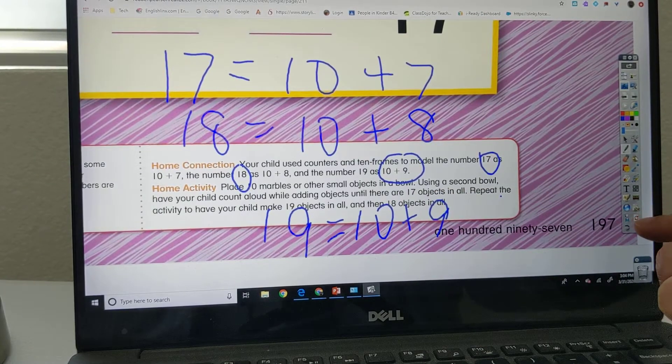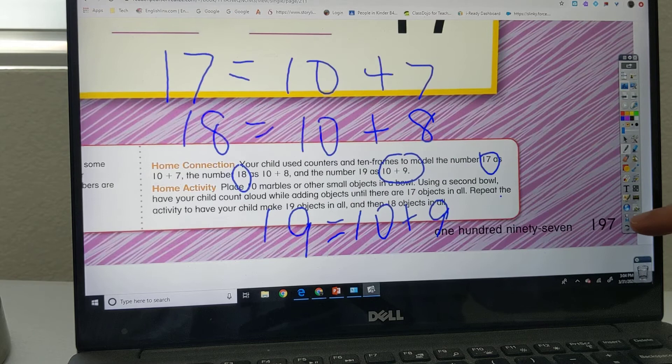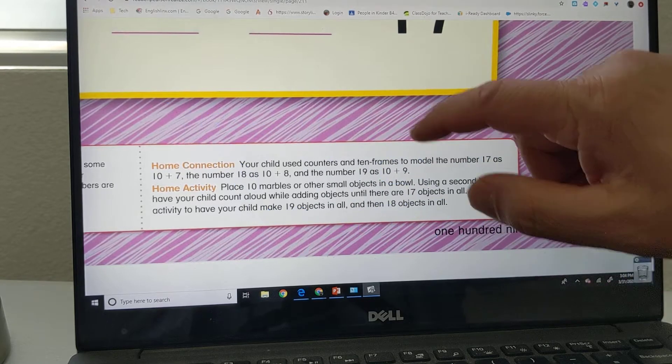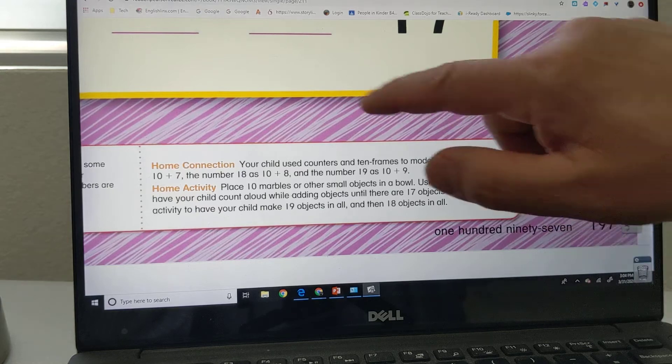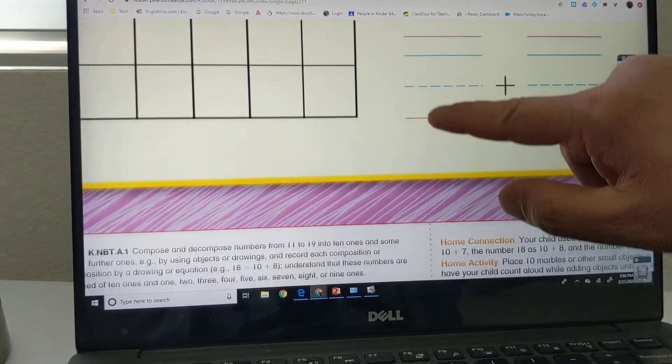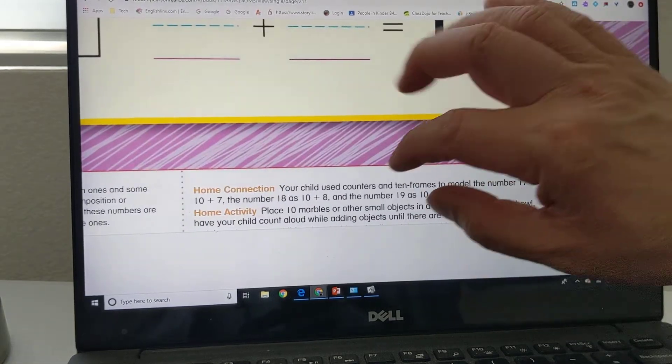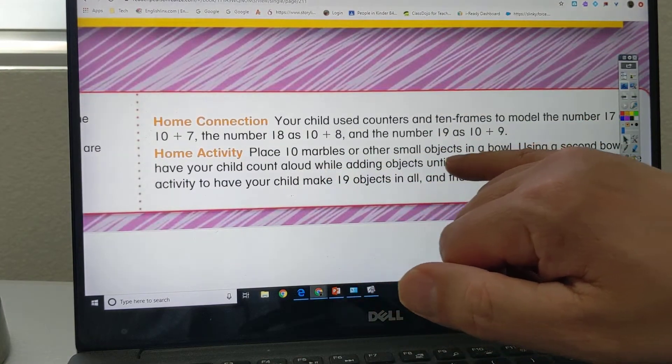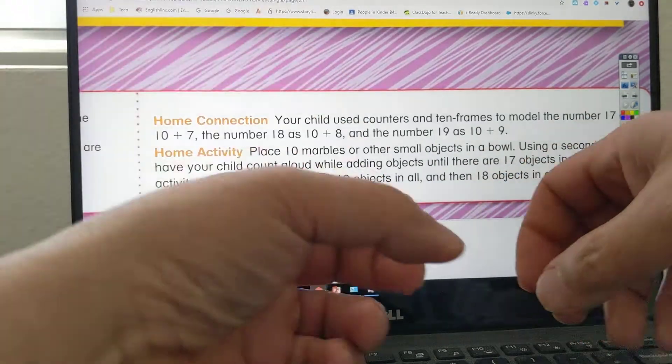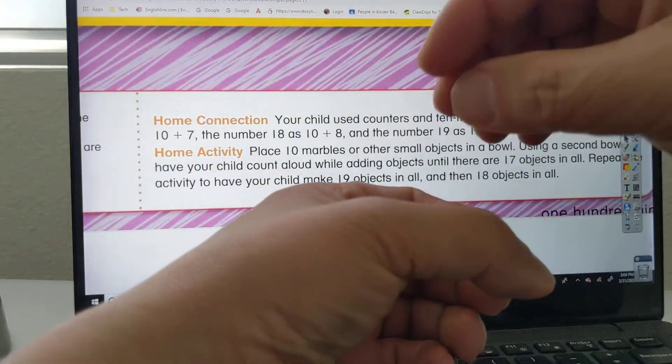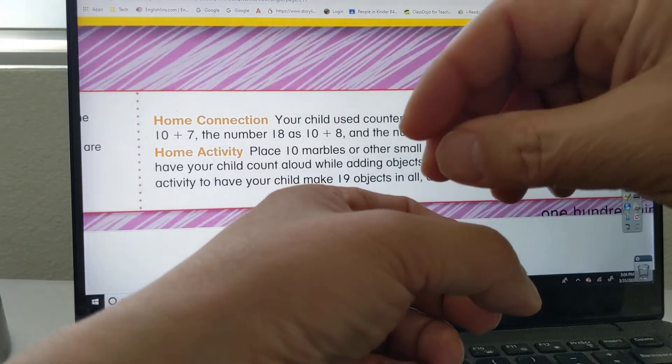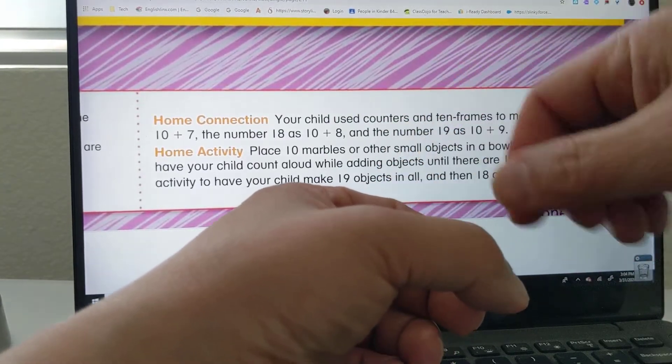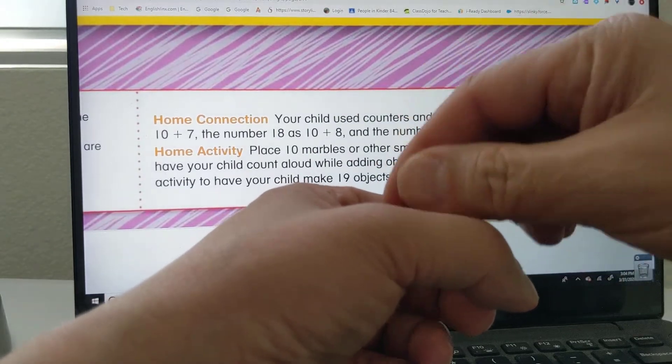All right, let's go to home activity. What are you supposed to do here? Place 10 marbles or other small objects in a bowl. So you have a bowl here and you place marbles, or you place little rocks, or you put little pieces of shredded paper, some kind of object and put it in a bowl.